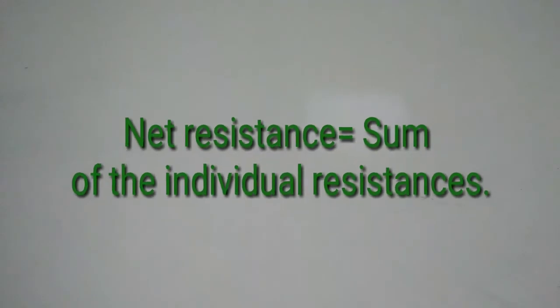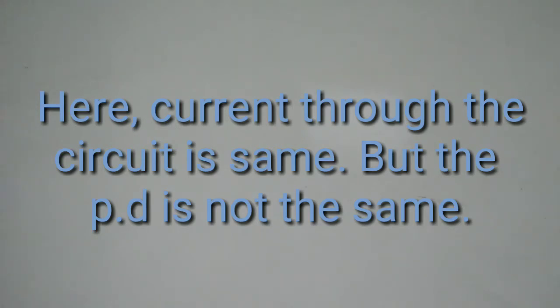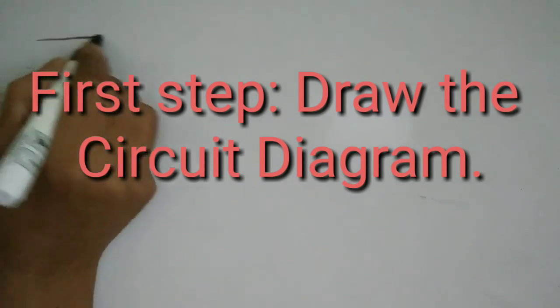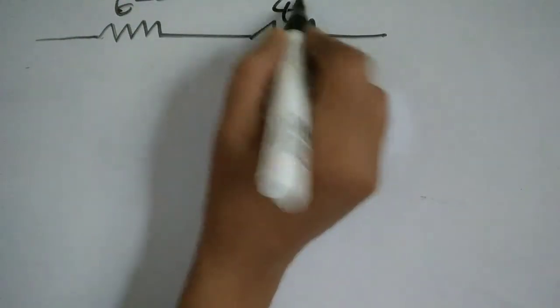Let us do one problem based on that. A resistance of 6 ohms is connected with another resistance of 4 ohms in series. A potential difference of 20 volts is applied across the combination. Calculate the current through the circuit and the potential difference across the 6 ohm resistance. In a series circuit, only the current remains the same and the potential difference varies. First, draw the circuit diagram: 6 ohms and 4 ohms connected in series with a 20 volt cell.